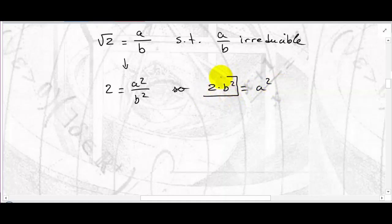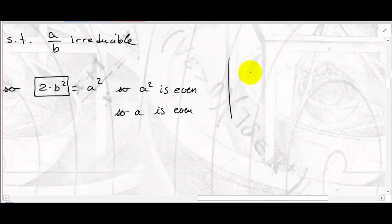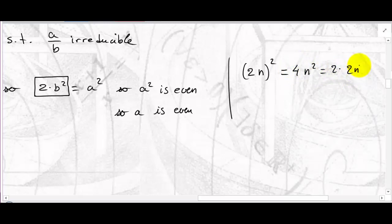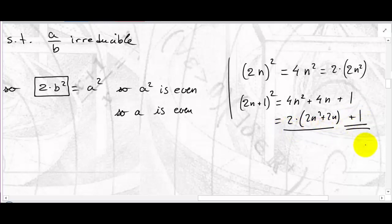Look at A squared — it equals two times something, so A squared is even. If A squared is even, then A itself must be even. To be convinced: an even number is 2n, and squaring gives 4n squared, which is 2 times 2n squared — so it's even. But if you square an odd number (2n+1), you get 4n squared plus 4n plus 1, which is 2 times (2n squared plus 2n) plus 1 — that's odd. So the square of an odd is odd, and the square of an even is even.